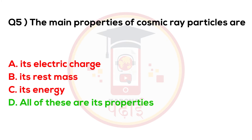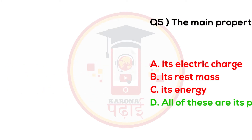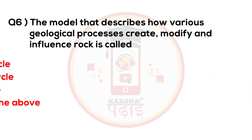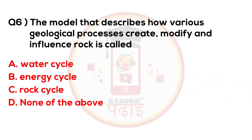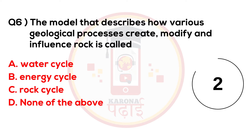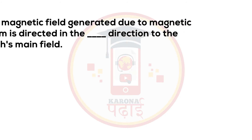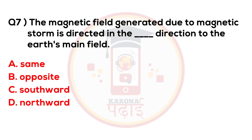The model that describes how various geological processes create, modify, and influence rock is called the rock cycle. The magnetic field generated due to a magnetic storm is directed in the opposite direction to the Earth's main field.